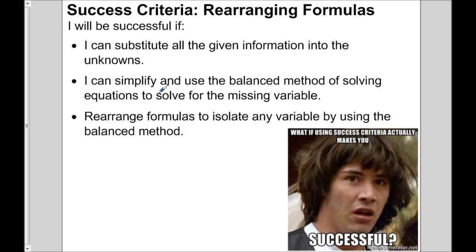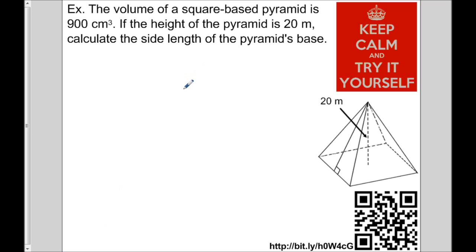In order to isolate any variable, I use the balanced approach — whatever I do to one side of the equation, I do the same on the other side. Let's look at the success criteria. You will be successful if: you can substitute all given information into the formula; you can simplify and use the balanced method to solve for the missing variable; and you can rearrange formulas to isolate any variable using the balanced method. The practice question: the volume of a square-based pyramid is 900 cubic centimeters, and the height is 20 meters — calculate the side length of the base. Pause the video, give it a try, and press play when ready.